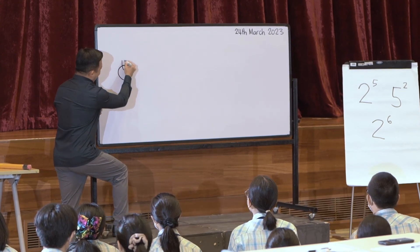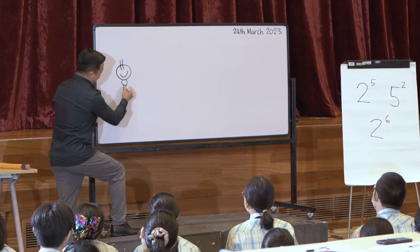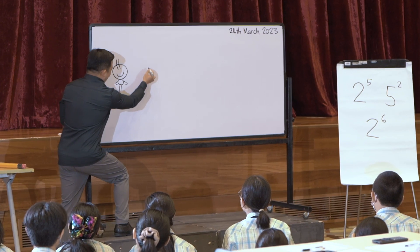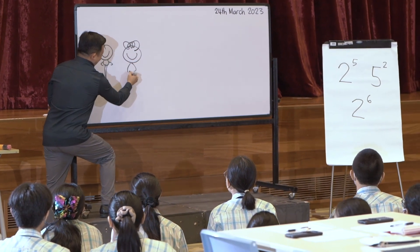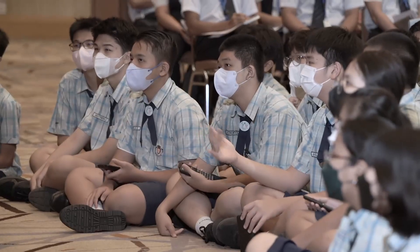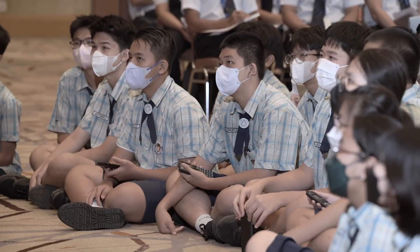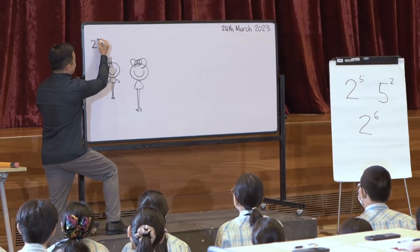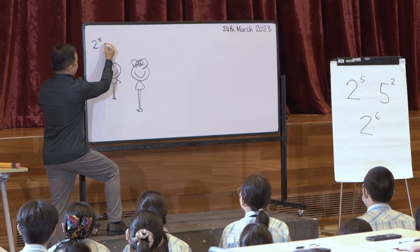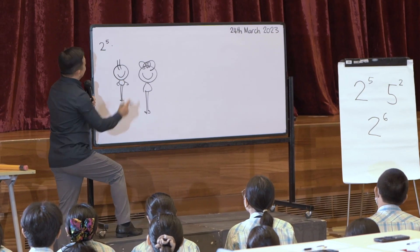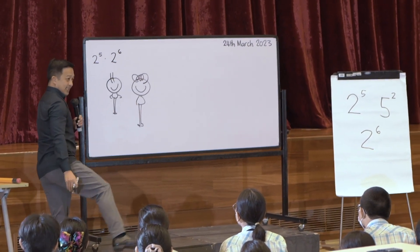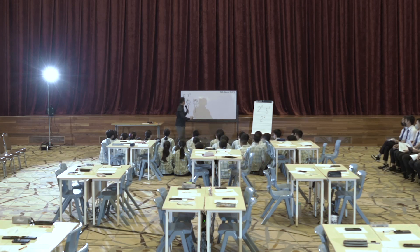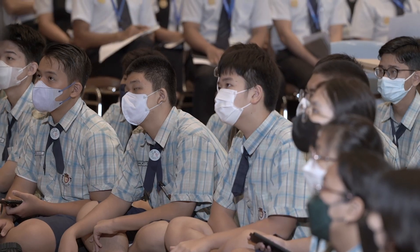So the first friend, he's spiky. And the other friend, she's curly. So spiky thinks that this multiply — I'll write multiply like that. Spiky was trying to do this, and curly was also trying to do the same thing.